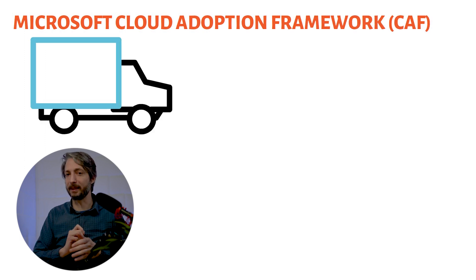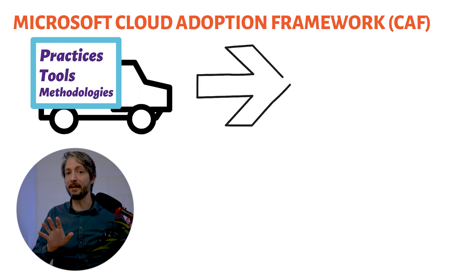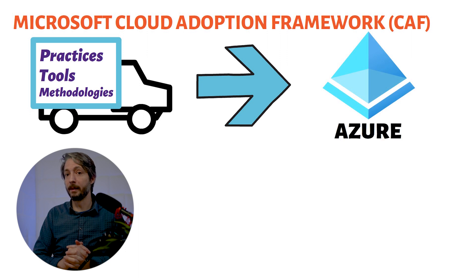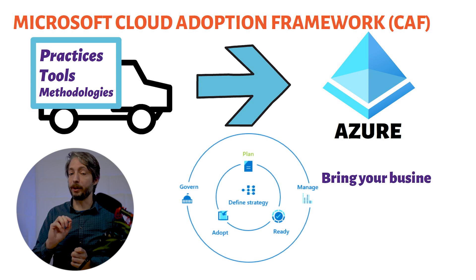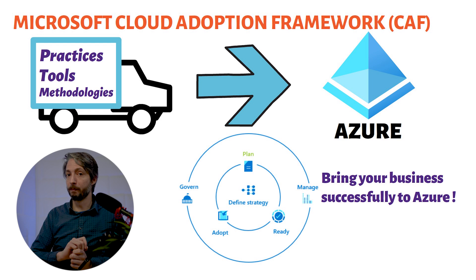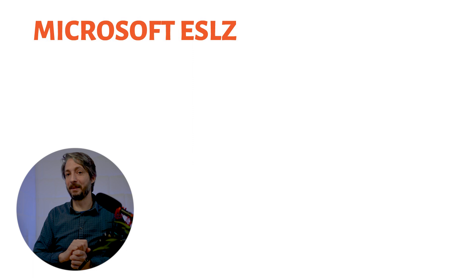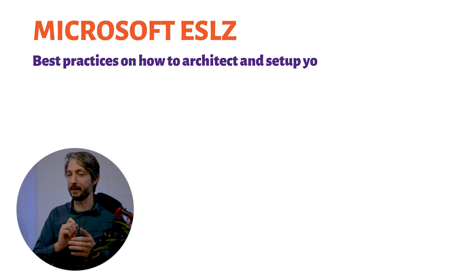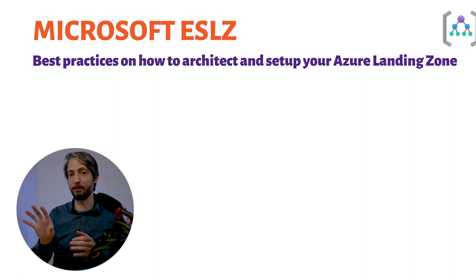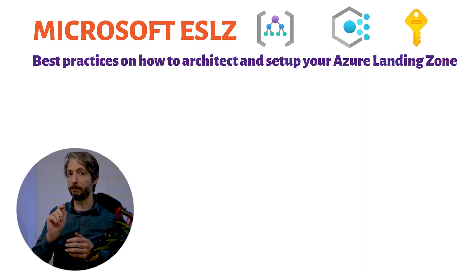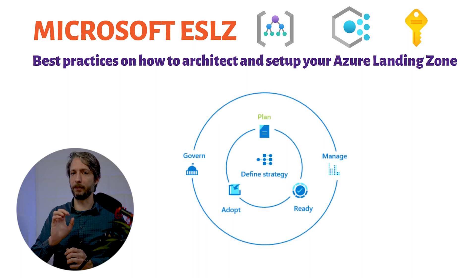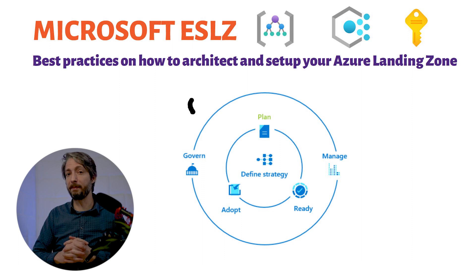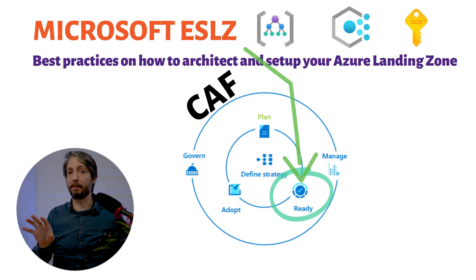The next concept is the Microsoft Cloud Adoption Framework, CAF — a detailed guidance of practices, tools, and methodologies to implement business and technological strategies for enterprises. It guides you through the journey with business drivers on how to successfully end up in Azure. Thirdly, we have the Microsoft Enterprise-scale Landing Zone, ESLZ — a set of best practices on how to architect and set up your Azure landing zone, showing best practices for management groups, policies, and subscriptions to ensure your environment is scalable and modular. The Enterprise-scale Landing Zone falls within the Ready phase of the Cloud Adoption Framework, which guides you through how to set up and create a landing zone.